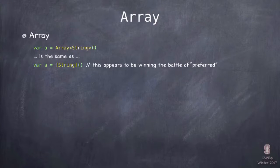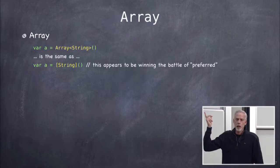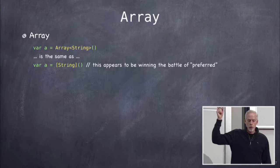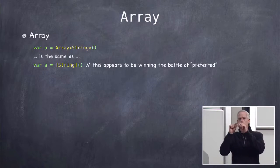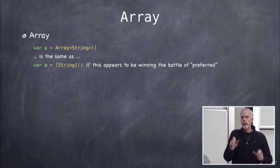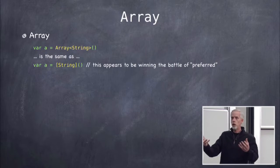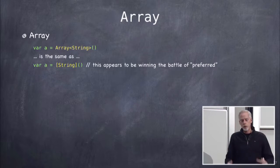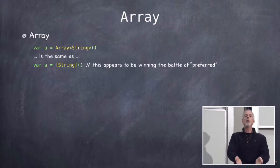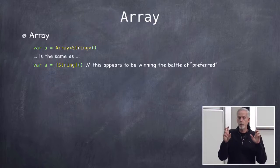Arrays — everyone knows what a generic array is. There's a special syntax: [String] is exactly the same as Array<String>. Open square bracket, type, close square bracket is the preferred way to declare arrays. So [String] means array of string.